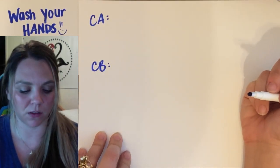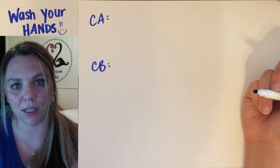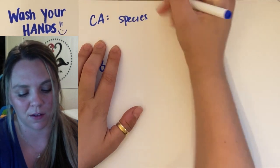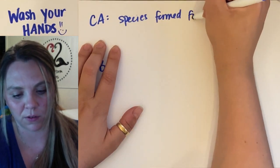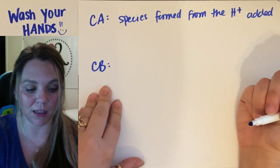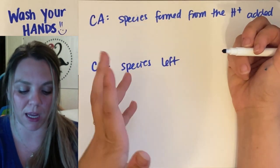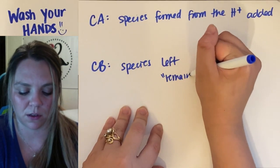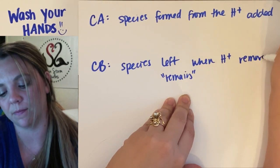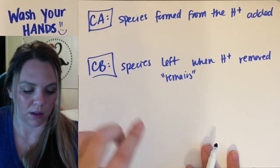We like to abbreviate in chem, right? So CA, conjugate acid. CB, conjugate base. If you want the technical definition of it, the conjugate acid is going to be the species formed from the H+ added, versus the CB is going to be the species that's left, or the species that remains, when the H+ is removed. Just if you want that textbook definition.